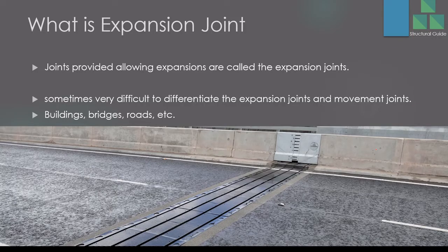What is an expansion joint? What do we need to do with expansion joints and why do we need them? An expansion joint is a joint that allows expansion or expansion movements. It is a bit difficult to differentiate expansion joints from movement joints, because both allow movement — but as the name implies, expansion joints are specifically meant for accommodating expansions.